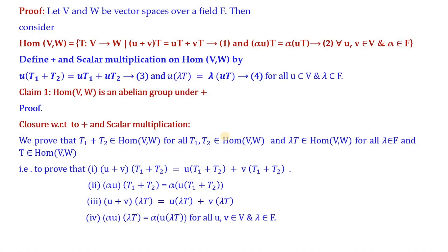The proof consists of two claims. In Claim 1, we show that Hom(V,W) is an abelian group under addition. In Claim 2, we verify axioms V1, V2, V3, and V4 for Hom(V,W) to be a vector space over F. We begin by proving Hom(V,W) is an abelian group under addition.